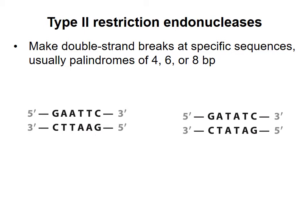Recognition sites for restriction enzymes are usually palindromes. A palindromic DNA sequence reads the same on both strands in the 5' to 3' direction. Both sequences shown here are palindromes. For example, the complement to the sequence GAA-TTC is GAA-TTC. The sequence reads the same on both strands. Note that this is a bit different from how the word palindrome is used in language. These sequences are recognized by the enzymes EcoRI and EcoRV.